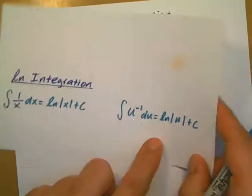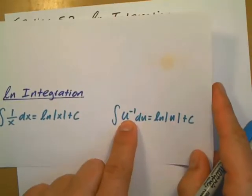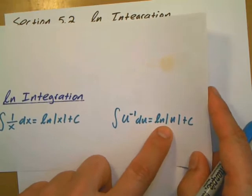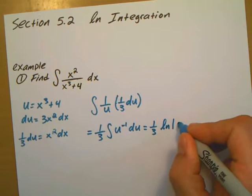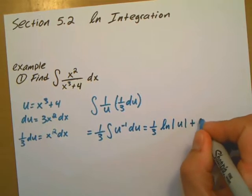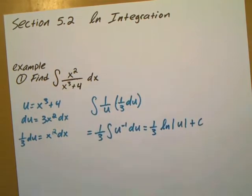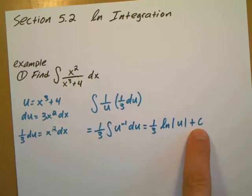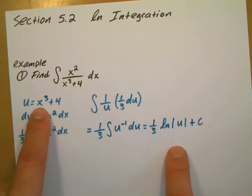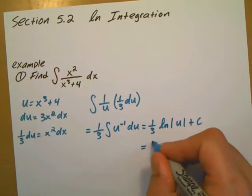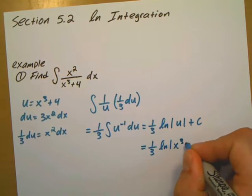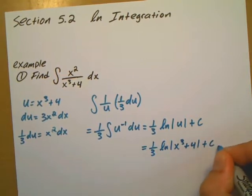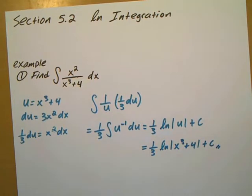The anti-derivative of u to the negative 1 is going to be ln absolute value of u. So it's going to be 1 third ln absolute value of u plus c. I don't have any upper and lower limits, so my answer is going to have a plus c, a constant of integration. Then I'll go back to what I set u equal to initially, which is 1 third ln absolute value of x to the third plus 4 plus c. And that's my anti-derivative.